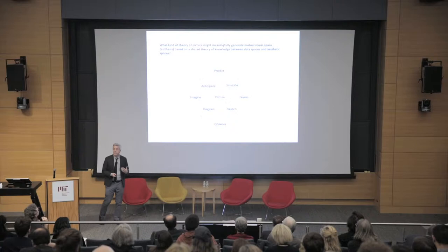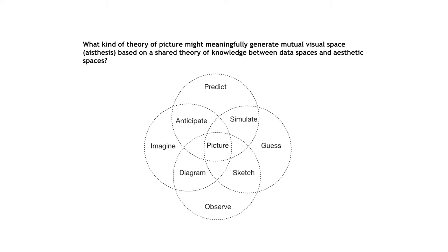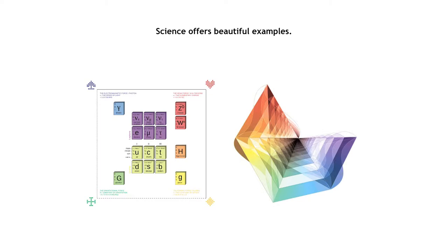A question I'm going to put in various different ways in the next part of this lightning round, and then to the rest of the panel and the audience, is: what is a shared theory of picture? How can we generate a mutual visual space between art and science, and not fall into this trap of just machine washing one beautiful image back into something we can look at but not understand? Science has beautiful examples, like the standard model or the amplitohedron, where complex informational states are concentrated into a kind of picture.